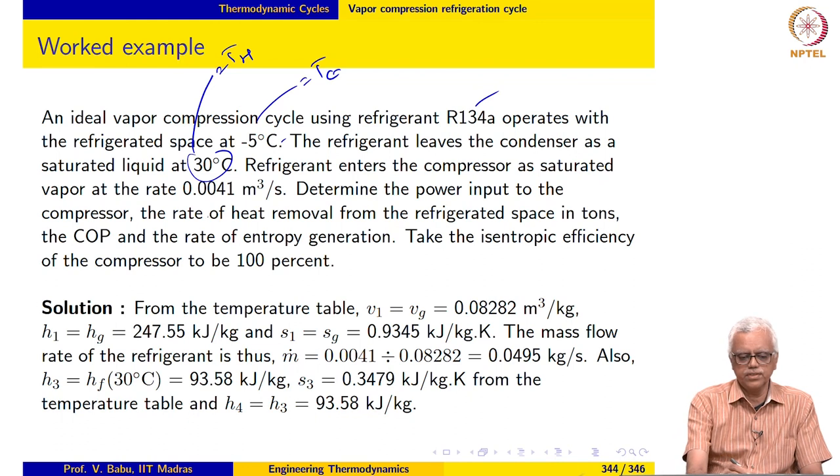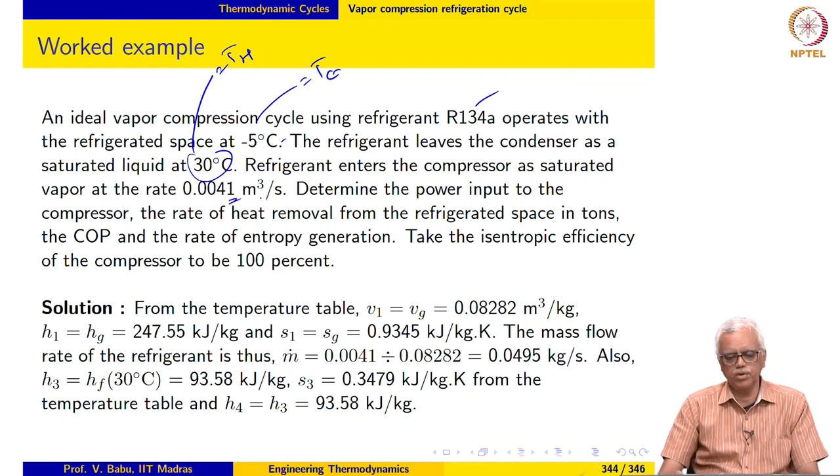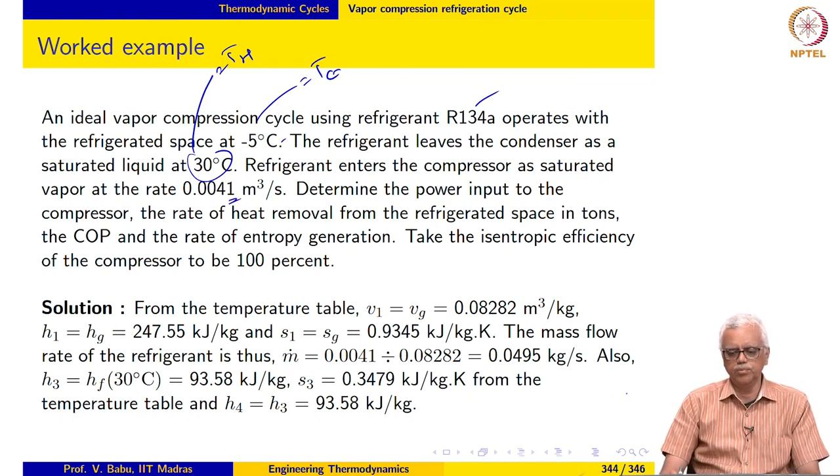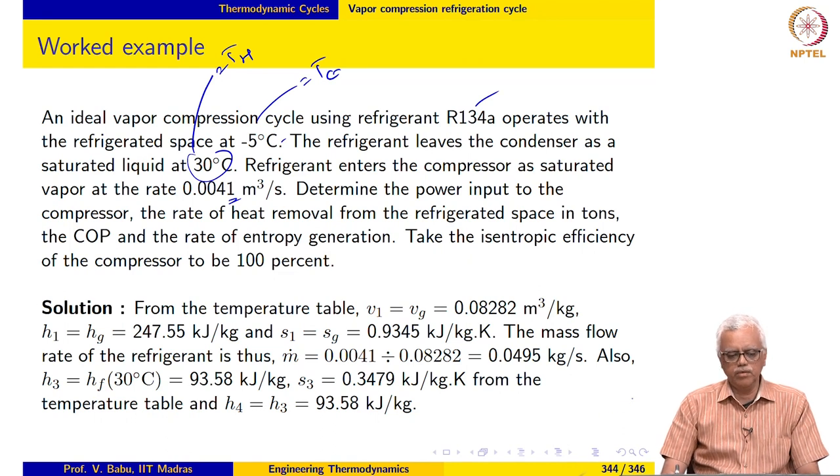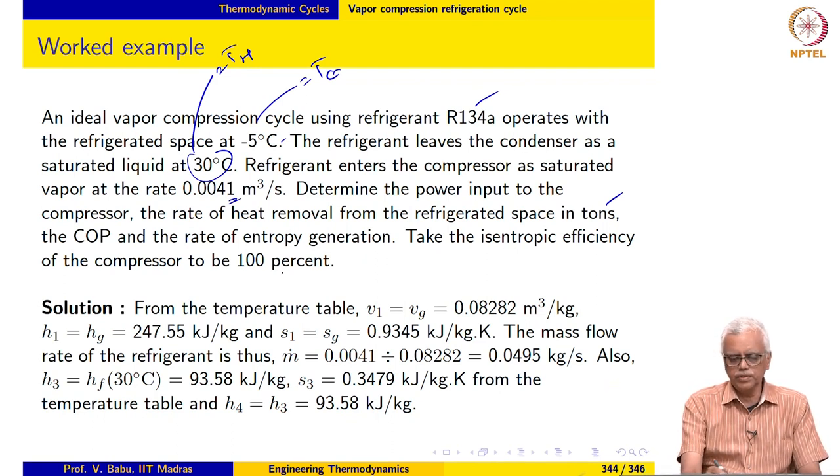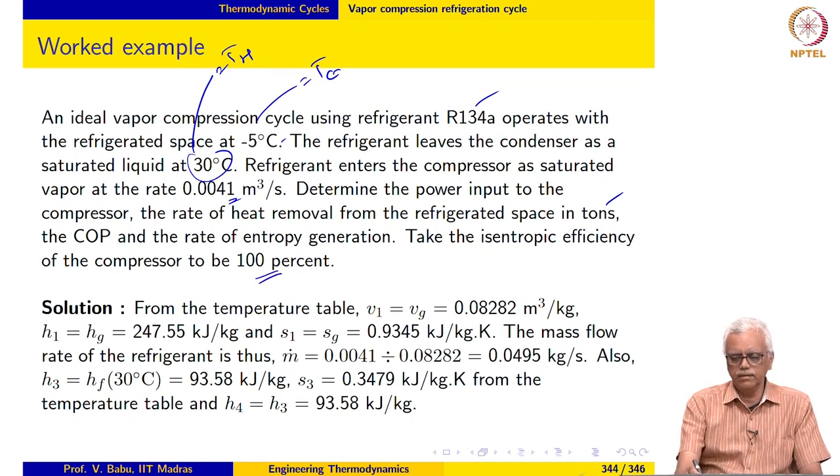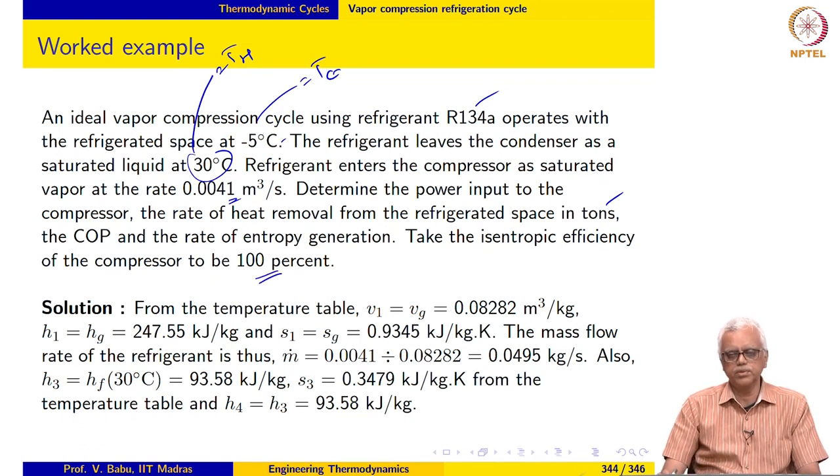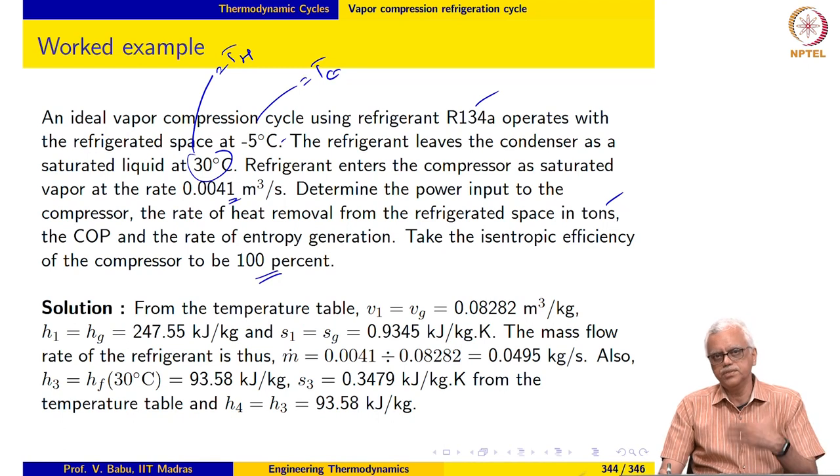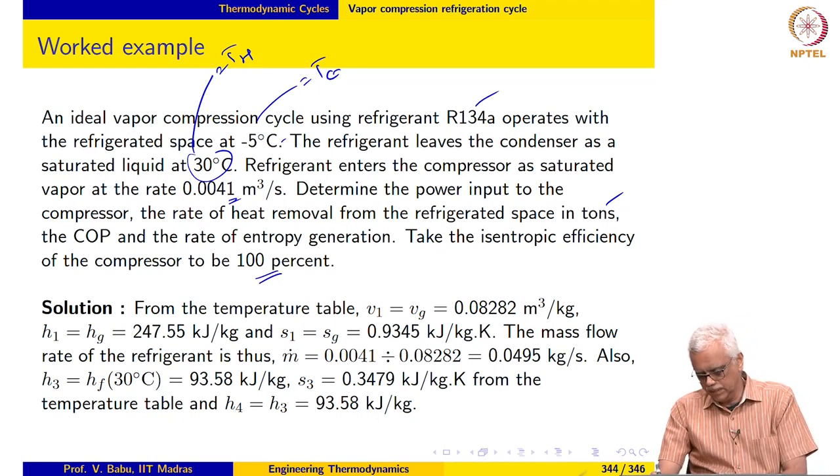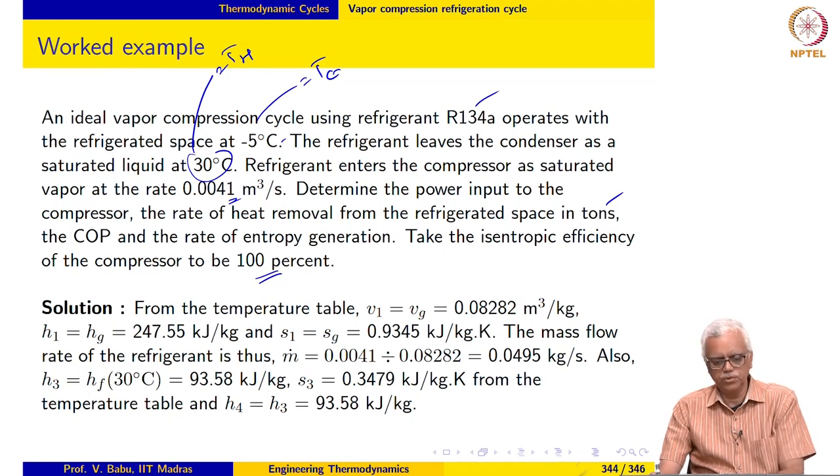Refrigerant enters the compressor as saturated vapor at the rate of 0.0041 meter cube per second. Determine the power input to the compressor, rate of heat removal from the refrigerator space in tons and COP and the rate of entropy generation. We assume the cycle to be ideal and take the isentropic efficiency of the compressor to be 100 percent which means the compression process is isentropic and goes from 1 to 2s.